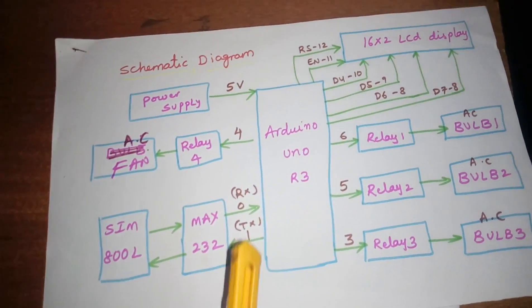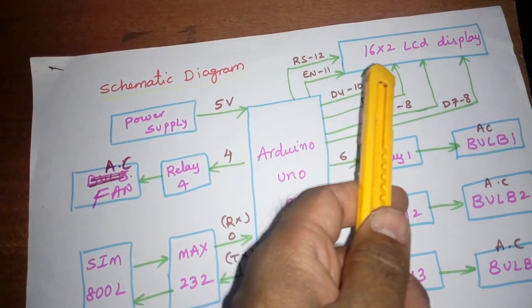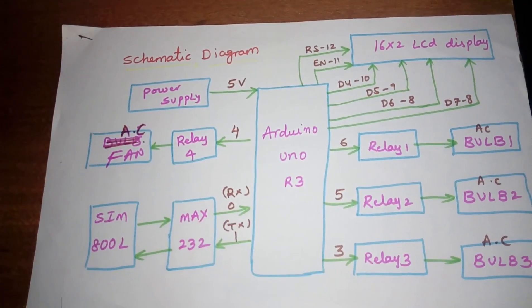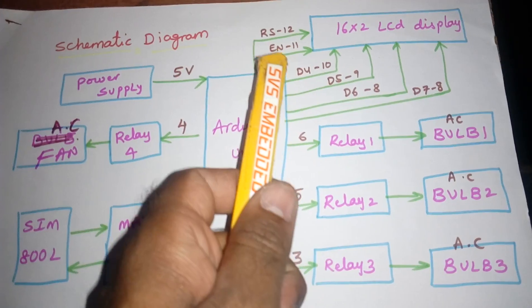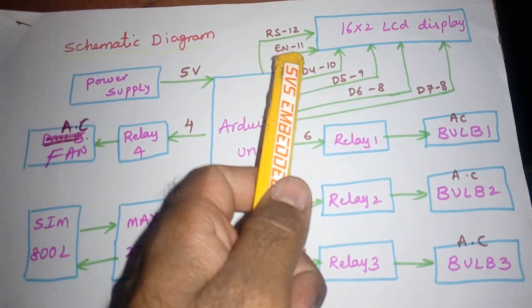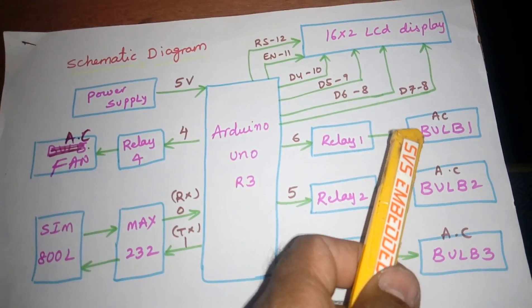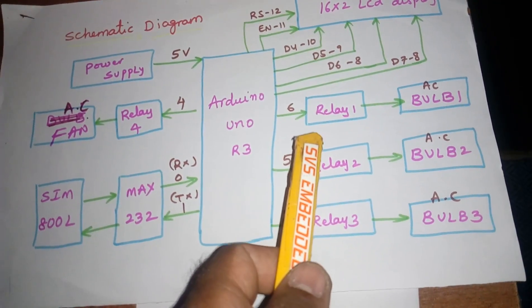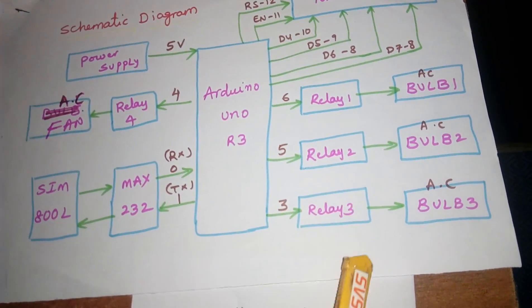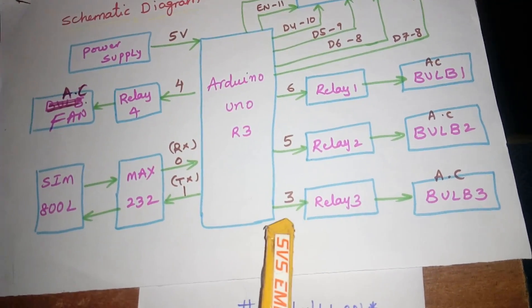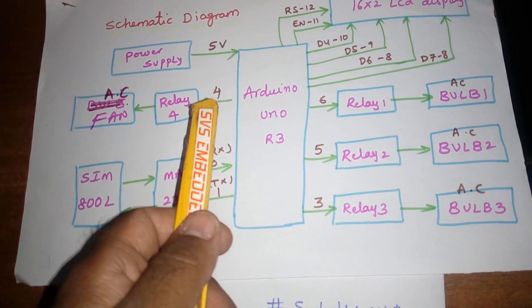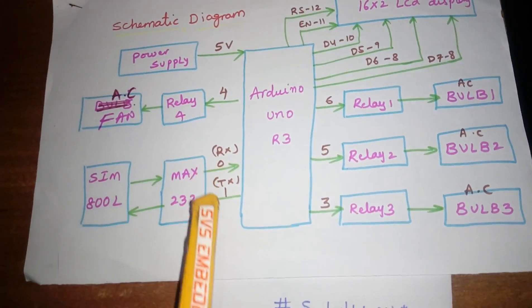This is the schematic diagram. Arduino Uno R3 and 16x2 LCD display connections: RS, enable, D4, D5, D6, D7 connected to pins 8 through 11, and pins 10, 9, 8, 7. Relay 1, relay 2, relay 3 connected to pins 6, 5, 3. AC bulb 1, AC bulb 2, AC bulb 3, DC fan, power supply, RS and enable on pins 0 and 1.